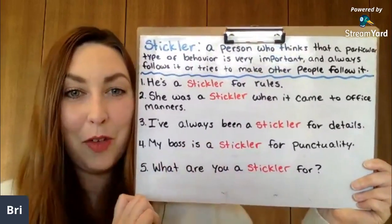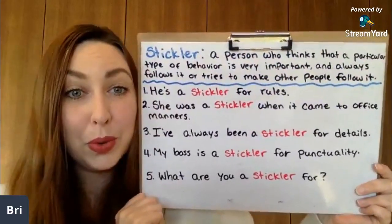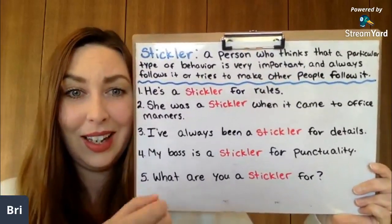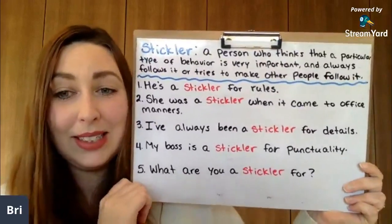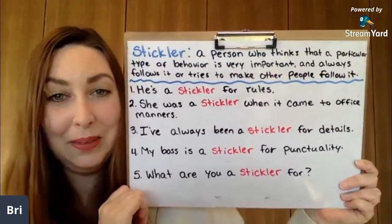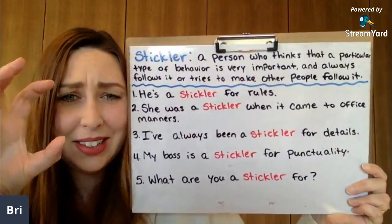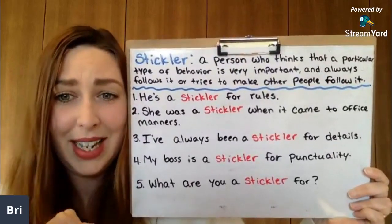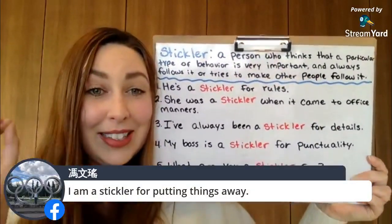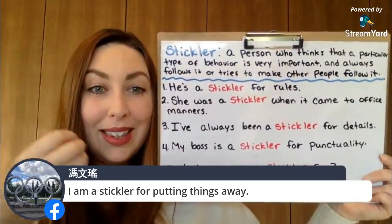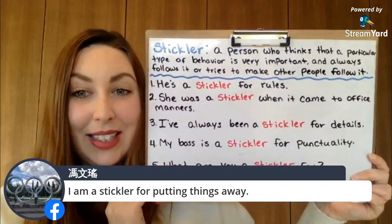And number five — this is a question for my students: What are you a stickler for? Are you a stickler for rules? Are you a stickler for a certain etiquette? Are you a stickler for punctuality? Please tell me in the comments. So remember, a stickler is a person who has a strong, particular type of behavior they think is very, very important, and they always try to follow it.